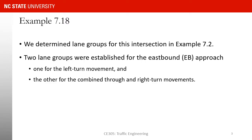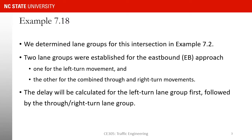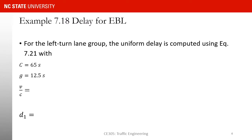So in example 7.2, we determined different lane groups for the eastbound approach. We had a left turn lane group and also a combined through and right turn movement. So what we are going to do in this example is find the control delay for eastbound left and eastbound through-right lane groups separately. So for the left turn lane group, or eastbound left lane group, we have the following input.